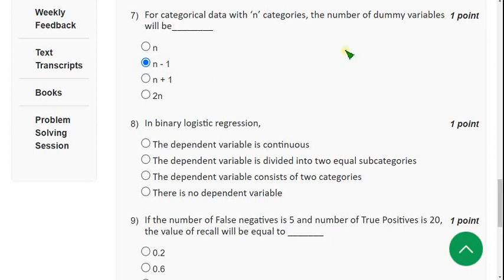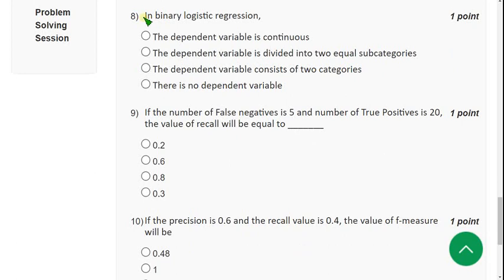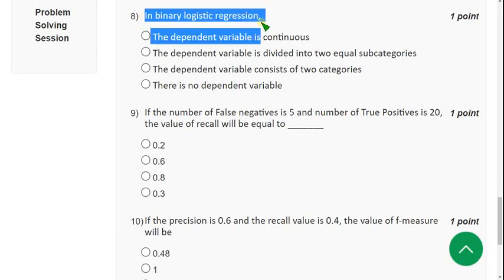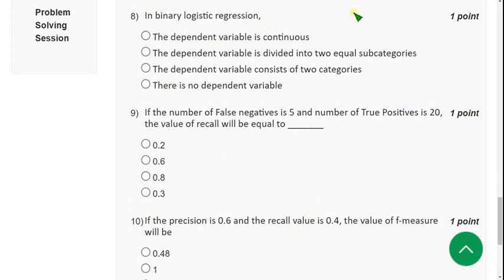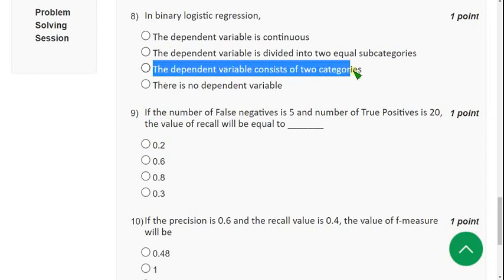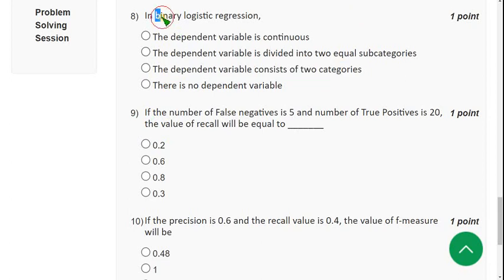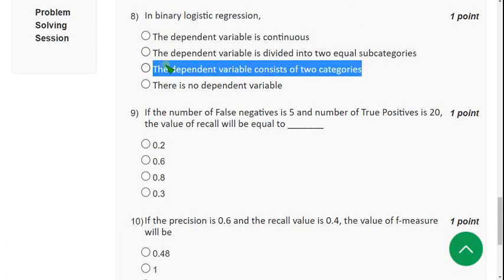Next question, eighth one. In binary logistic regression, which of the following options are correct? The answer is third option: The dependent variable consists of two categories. The name itself represents binary. Binary means two. So the dependent variable consists of two categories. For eighth question the probable answer is option C.